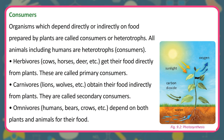Consumers are organisms which depend directly or indirectly on food prepared by plants. They are called heterotrophs, and all animals including humans are heterotrophs. Herbivores — such as cows, horses, and deer — get their food directly from plants and are called primary consumers. Carnivores — such as lions and wolves — obtain their food indirectly from plants and are called secondary consumers. Omnivores — such as humans, bears, and crows — depend on both plants and animals for their food.